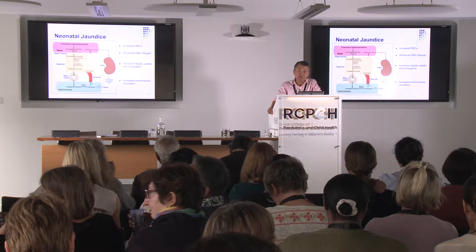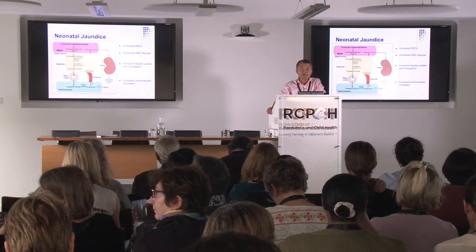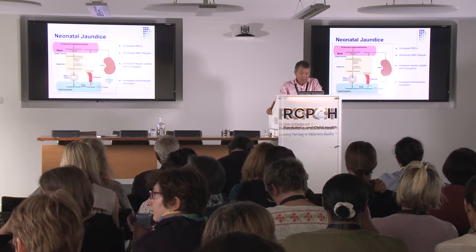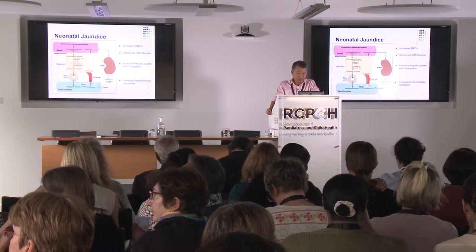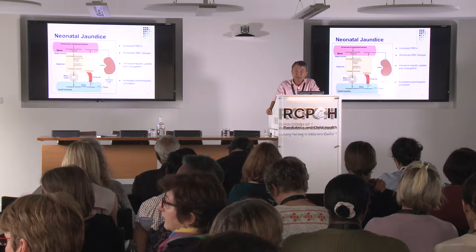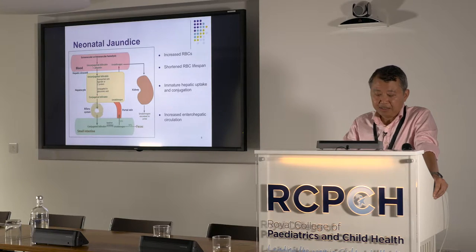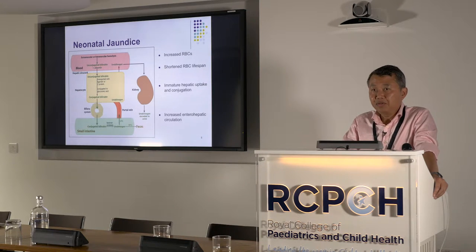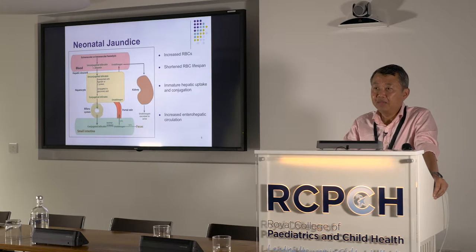I'm going to propose one terminology that describes the first mechanism — increased RBC production and then shortened lifespan. The third mechanism is the UGT polymorphism that Vinnie talked about, and the last one he is now referring to as starvation jaundice.